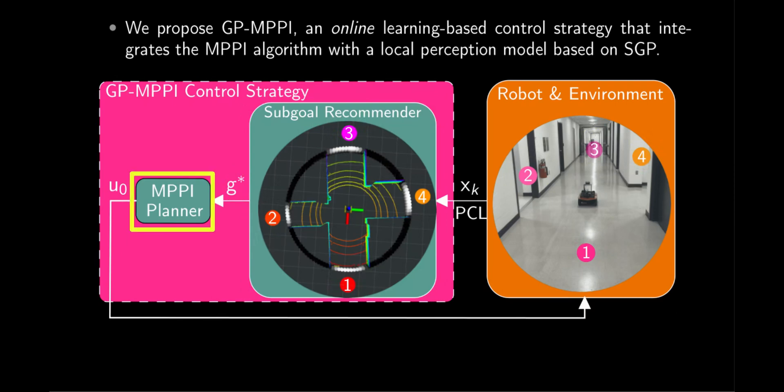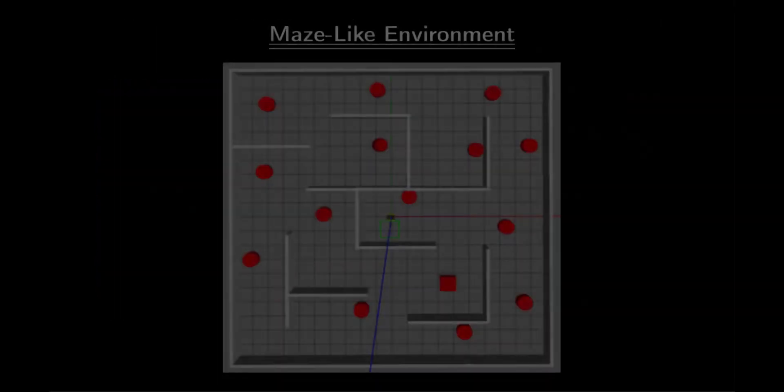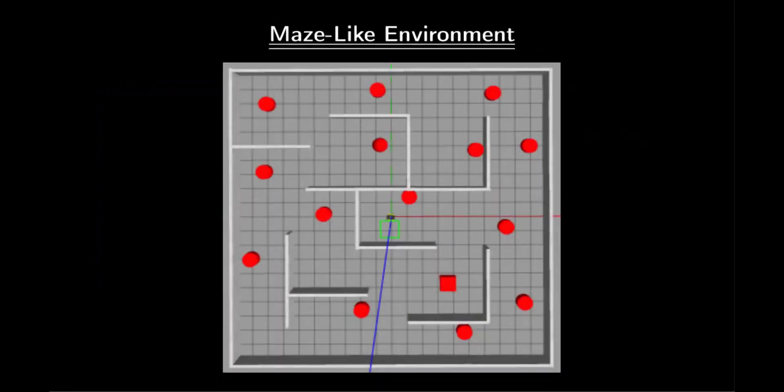Then, MPPI computes the optimal control sequence that satisfies the robot and collision avoidance constraints. Such a proposed approach eliminates the need for a global map of the environment or an offline training process. We validated our algorithm in both simulation and real-world setups.